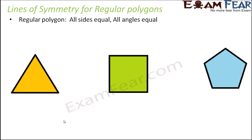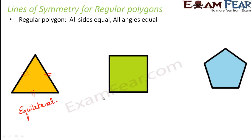Let us take some examples of regular polygons. On the screen you see a triangle — a triangle with all sides equal and all angles equal. That triangle is called an equilateral triangle. Similarly, a four-sided figure, that is a quadrilateral with all sides equal and all angles equal, is nothing but a square.